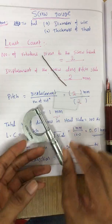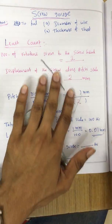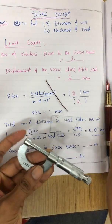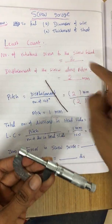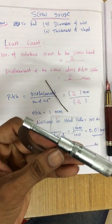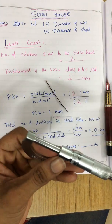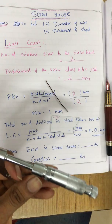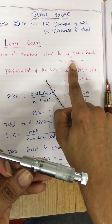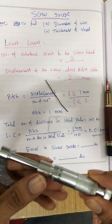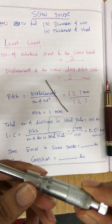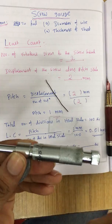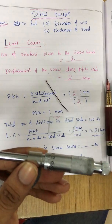Now for this calculation, we can give any number of rotations to the screw head — it's your choice. You can give five rotations or two rotations. This time I'm going to give two rotations. First, zero of the P scale is coincided.